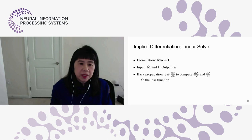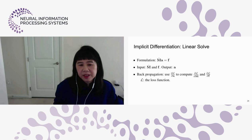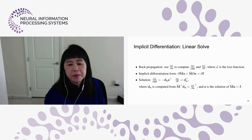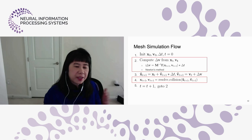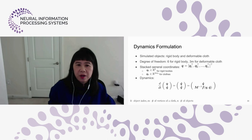We use the same formulations as the previous work, computing gradients using the loss function differentiated with respect to variables for backpropagation. However, now we have to account for the coupling between the two dynamical systems — both rigid body and deformable bodies. The degree of freedom for our linear system now includes six extra variables for the rigid body, as well as 3N variables for the deformable cloth, using a stacked generalized coordinate system.